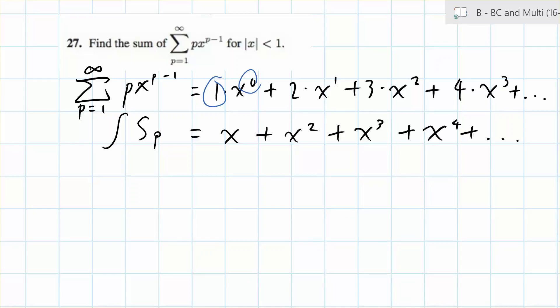All I've done here is take the integral of each term in the summation. Next, by looking at this series as a whole, it looks very familiar, if not the same, as the Taylor polynomial of x over 1 minus x.